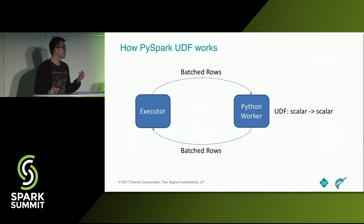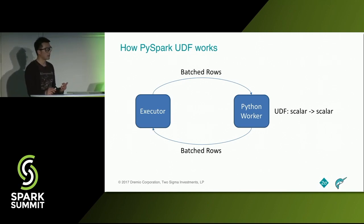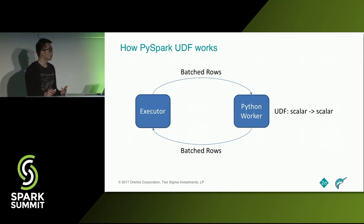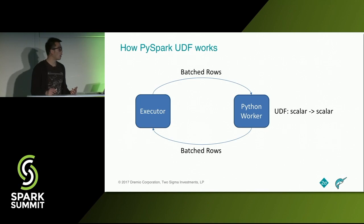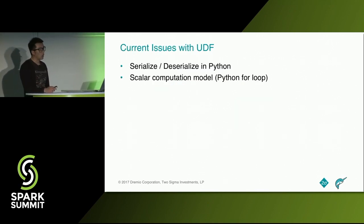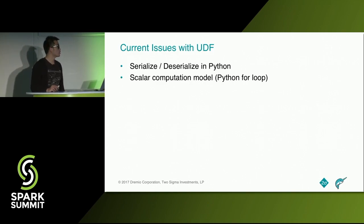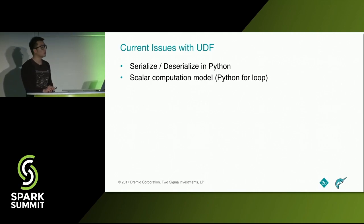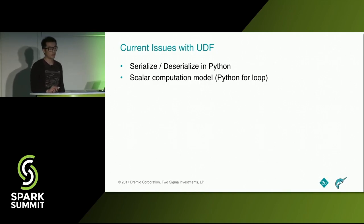I want to quickly illustrate how PySpark UDF currently works. We have two processes. On the left side, there's the executor process running in the JVM. On the right side, it's the Python worker process running in a Python runtime. During a UDF evaluation, the executor streams rows in batches to the Python worker. Upon receiving these rows, the Python worker simply invokes the UDF on a row-by-row basis and sends the results back. This is a simple architecture and it works, but as Julian mentioned, there are two issues: we're doing a lot of serialization and deserialization in Python, and the UDF invocation in a scalar computation model in a Python for loop is not very efficient either.